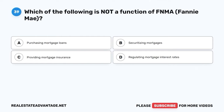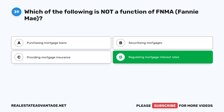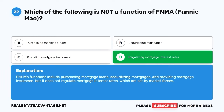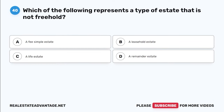Question 39. Which of the following is not a function of FNMA (Fannie Mae)? A. Purchasing mortgage loans. B. Securitizing mortgages. C. Providing mortgage insurance. D. Regulating mortgage interest rates. The correct answer is D: Regulating mortgage interest rates. FNMA's functions include purchasing mortgage loans, securitizing mortgages, and providing mortgage insurance, but it does not regulate mortgage interest rates, which are set by market forces.